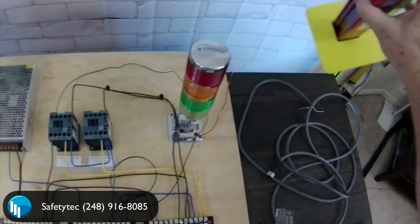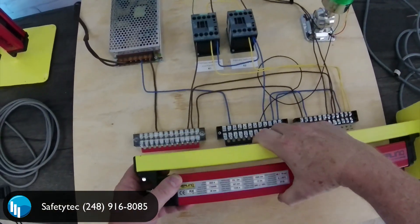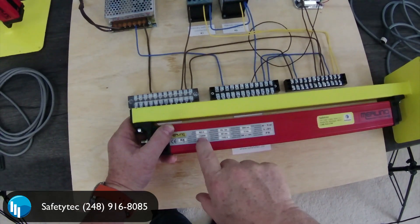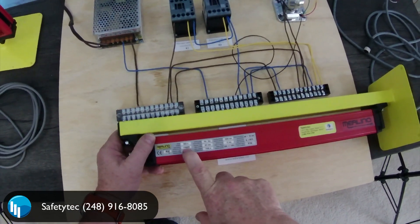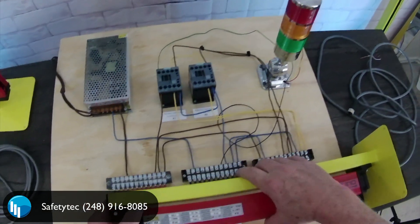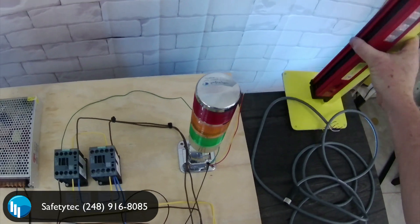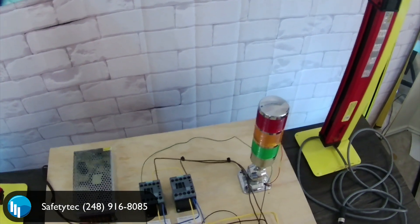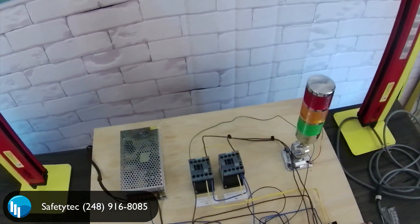Before we get started, it's really important to mention that with all light curtains, you need to make sure that the serial number on the transmitter matches the serial number on the receiver. Very, very important. If they're not a matched pair, it means it's either not a safety guard or it's not going to work.